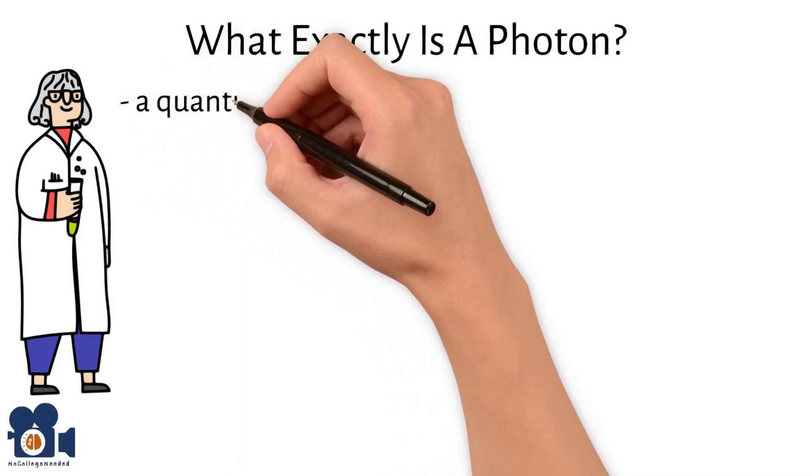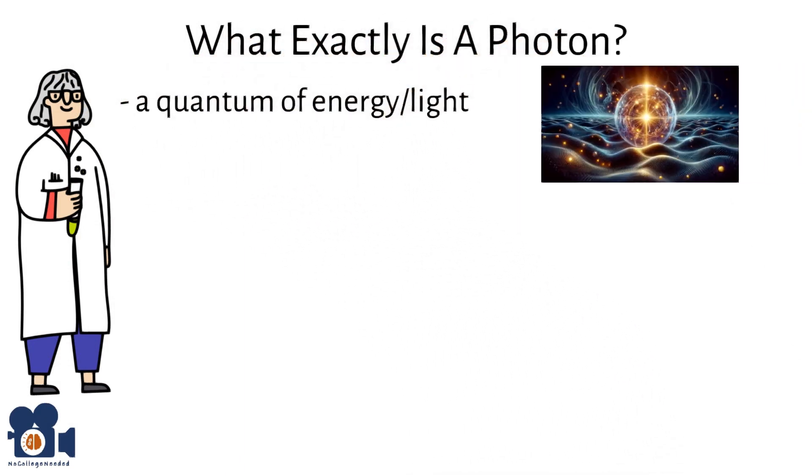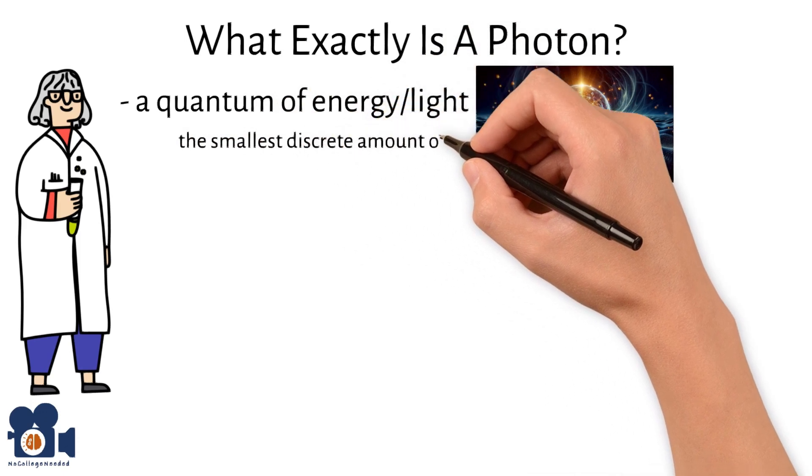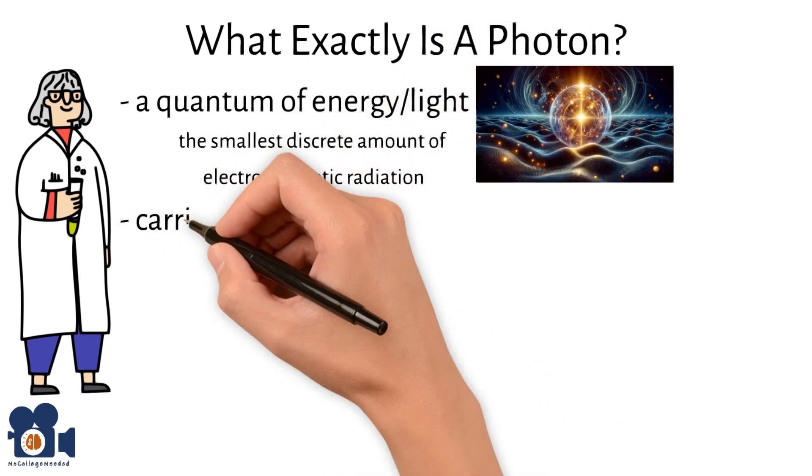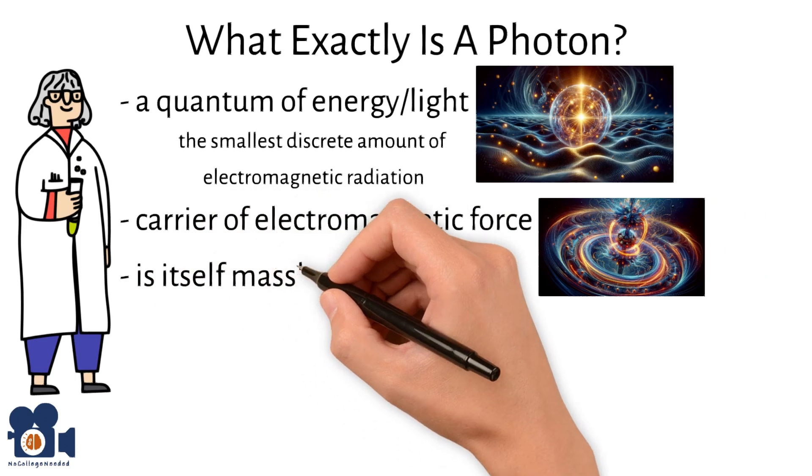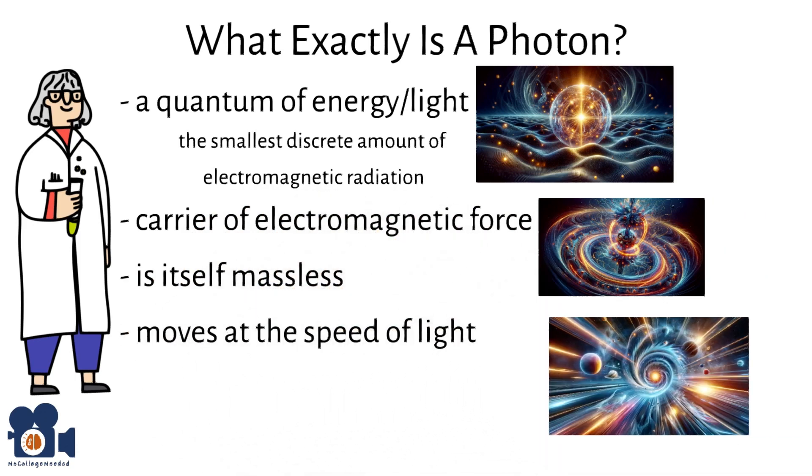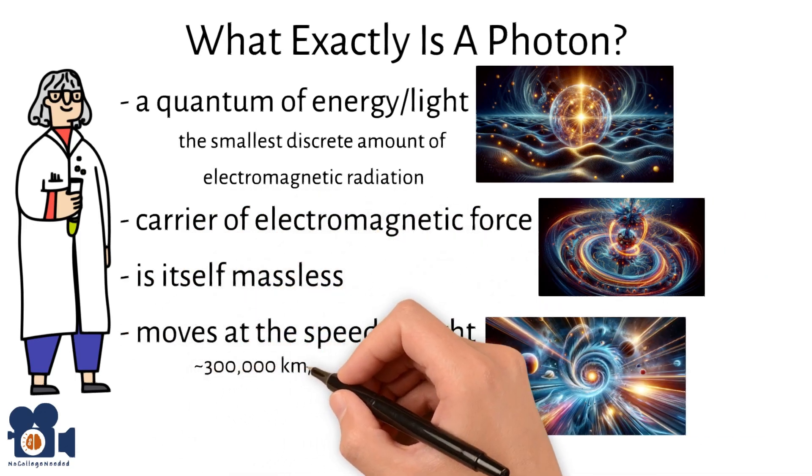At its core, a photon is a quantum of energy or light, which is the smallest discrete amount of electromagnetic radiation. It is the carrier of electromagnetic force, even though it itself is massless and always moves at the speed of light, which is almost 300,000 kilometers per second in a vacuum.